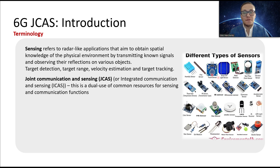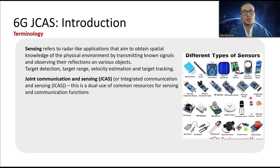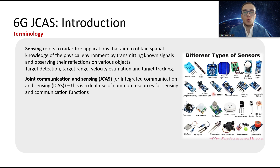There are already different types of sensors: infrared sensors, accelerometer, gyroscope sensor, real-time clock, metal detectors, temperature, infrared detectors, and so on and so forth. But in our case we're going to talk about sensing as radar-like capabilities in wireless systems and mobile networks.